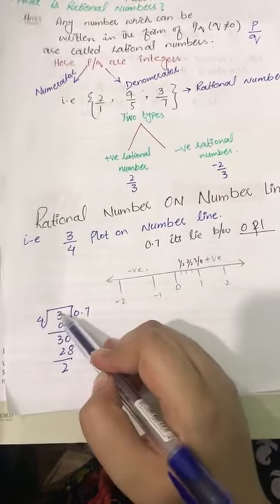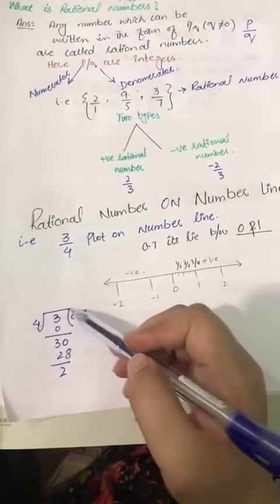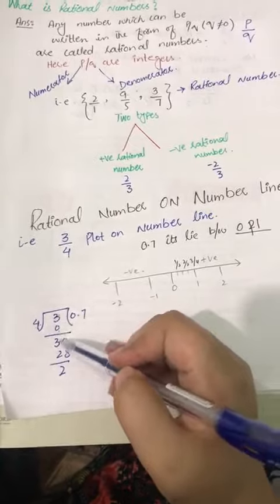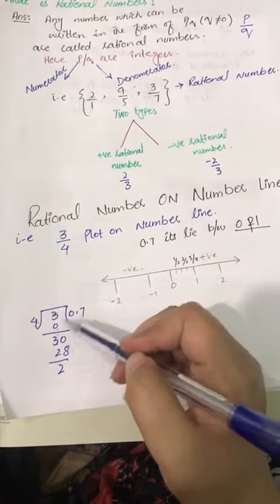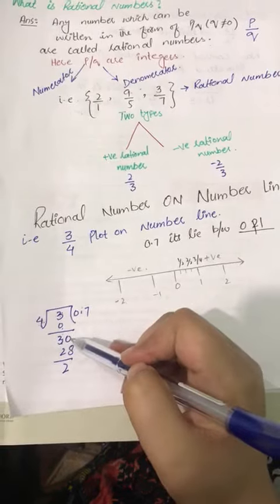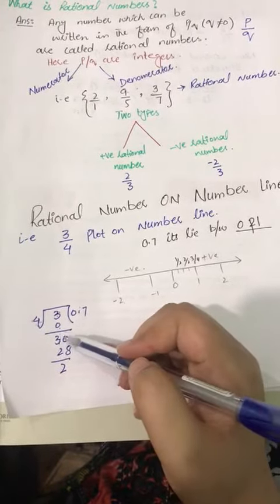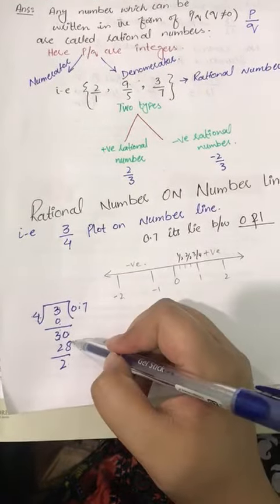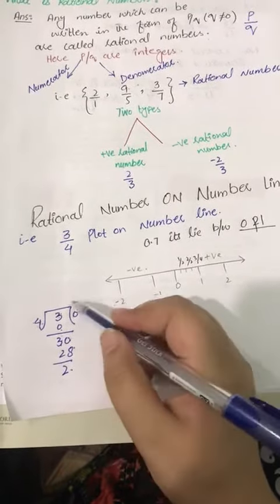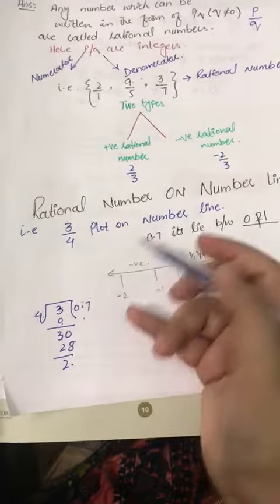4 is greater number but 3 is a smaller number. So, 3.0... 3 minus 0, 3 point... we get 0, 4 into 3 is 0. 30 divided by 4 is 7, that's 28. 30 minus 28 is 2, and we get 0.7.